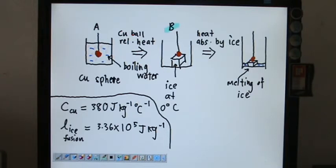It is placed on top of a cube of ice. So the heat will be released by the copper ball and the heat will be absorbed by the ice. So after absorbing the heat from the copper ball, the ice has melted. And this is a melting of ice.